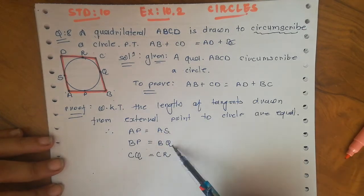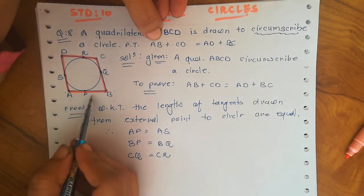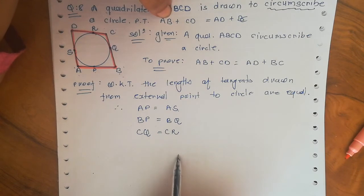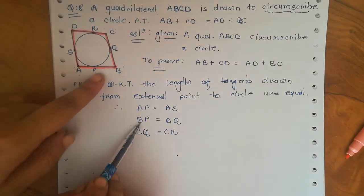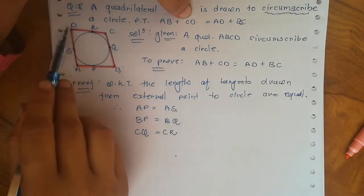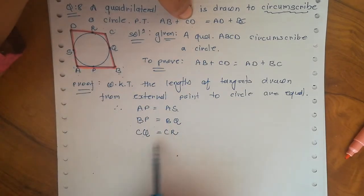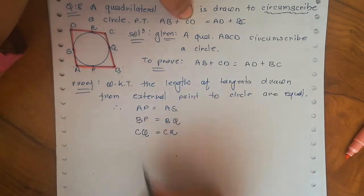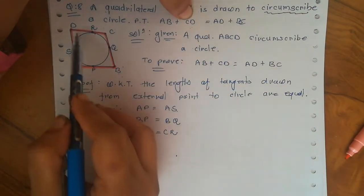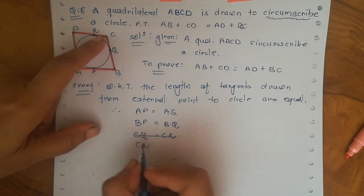One very important point in this question: we must write the equations in the correct order. We need to prove AB plus CD. AB becomes a sum as AP plus BP. So we write AP equals AS and BP equals BQ. For CD, we need CR plus DR, so we write CR equals CQ — see the figure — and then DR equals DS.